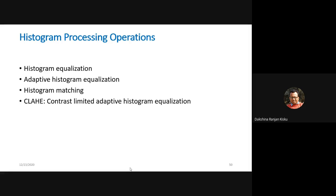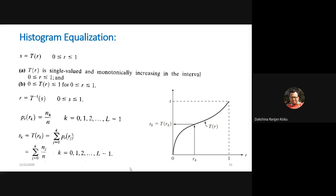As you know from histogram processing, the gray levels are represented along the x-axis and the frequency of gray levels along the y-axis. That generates the histogram components of the given input image. From those histogram components, we can analyze whether the given input image is a low contrast, dark, bright, or high contrast image, and accordingly choose a histogram processing operation to enhance it.